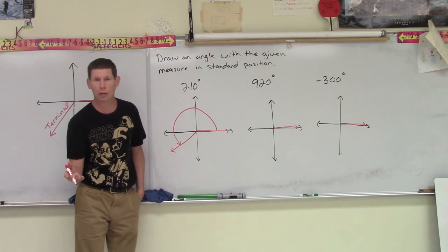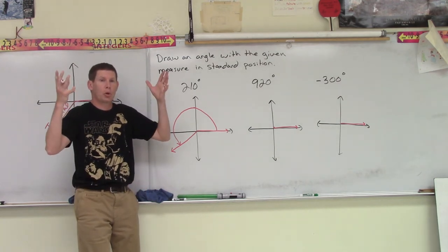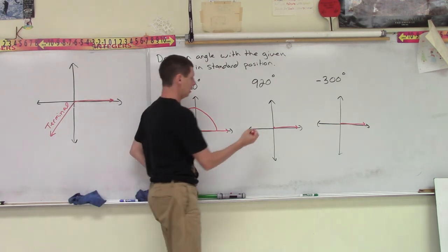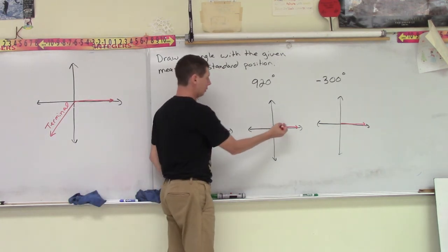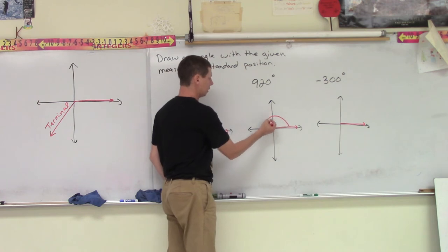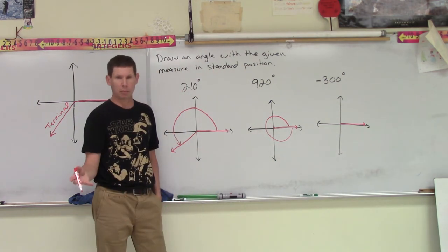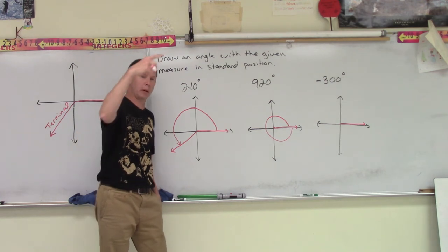What happens if you have to do 920? Same thing. We already have our initial side set up. So now we rotate. We're going to spiral this, right? We know we're going to be more than 360. And it can be more than 360, so you just keep the spiral going.